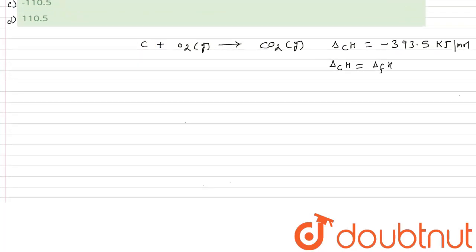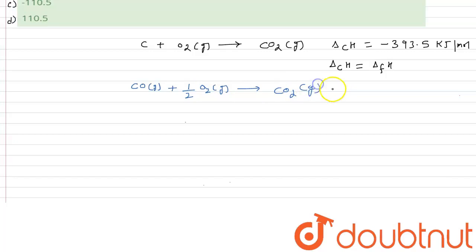For the enthalpy of combustion of carbon monoxide: carbon monoxide in gaseous state, which is its standard state, when treated with oxygen gives CO₂. The enthalpy of combustion for this reaction is given as minus 283 kilojoule per mole. These are the data we have been given.